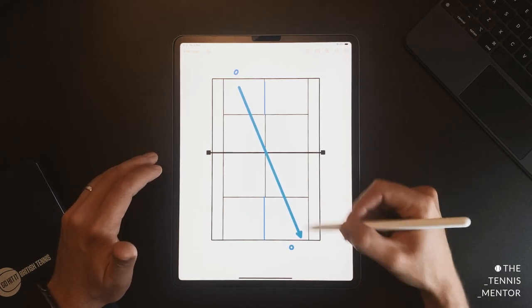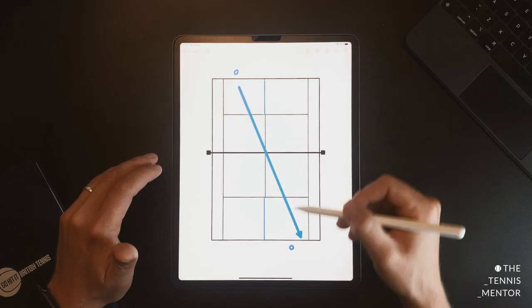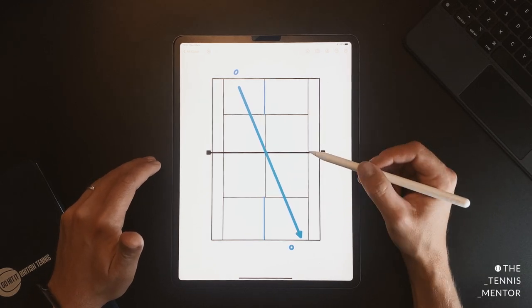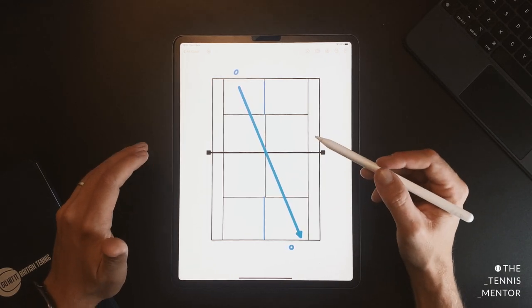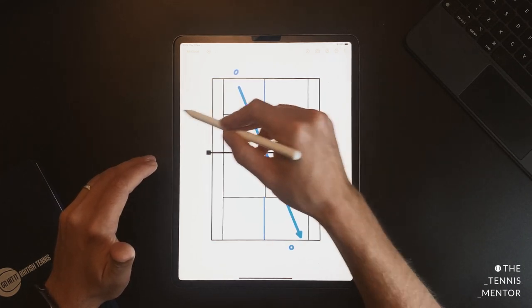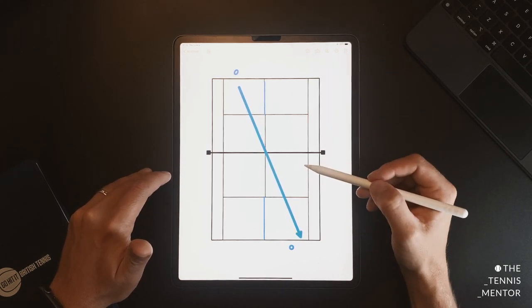When playing cross court, you have a slightly bigger distance from corner to corner compared to when you're hitting in a straight line. You're hitting over a slightly lower point in the net and generally when you play in singles and in doubles, you can make your opponent move further because you're actually getting them to move out of the court as opposed to hitting the ball straight back into the court in a straight line.